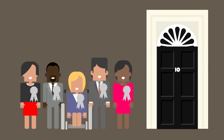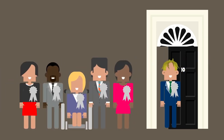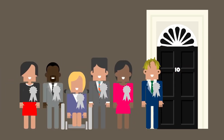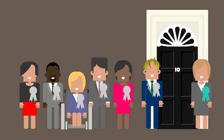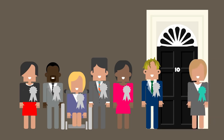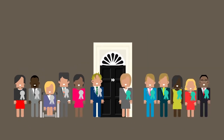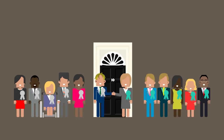The party with the most elected MPs forms the government, and their leader becomes the Prime Minister. If no one party wins the election, then this is called a hung parliament. If this happens, two or more parties might agree to join together to form what is known as a coalition government.